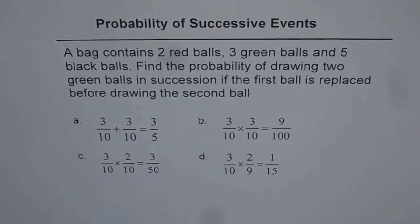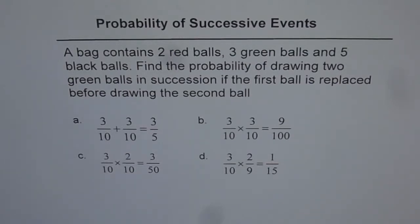Probability of successive events. A bag contains two red balls, three green balls, and five black balls. Find the probability of drawing two green balls in succession if the first ball is replaced before drawing the second ball.